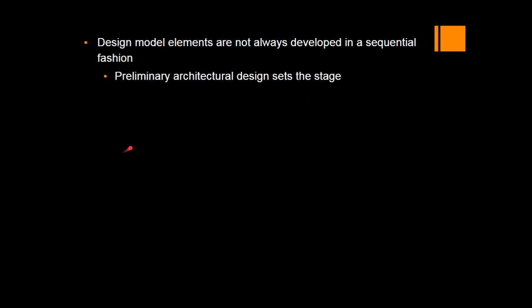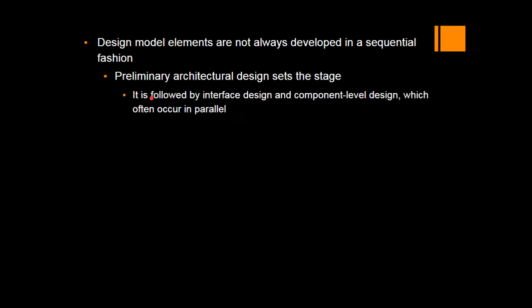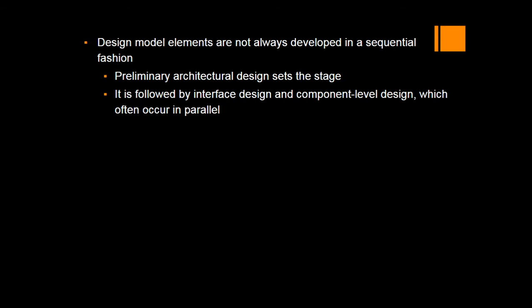The design model elements are not always developed in a sequential fashion. Once you develop a particular model in the preliminary stage, you then get into details such as communication between neighboring models and the interface design — these go in parallel. That means once you design a component, you also find out how that component is going to interact with the neighboring component. That is the parallel execution of the interface between the different modules.